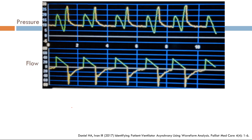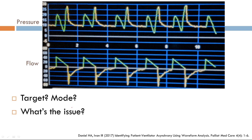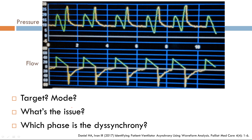Here you have a pressure and flow waveform. A few questions for you: What's your target and your mode of ventilation? What's the issue? Which phase is the dyssynchrony — is it a trigger dyssynchrony, target dyssynchrony, or cycle dyssynchrony? What's your differential diagnosis, and how do you fix it? Why don't you pause the video now.